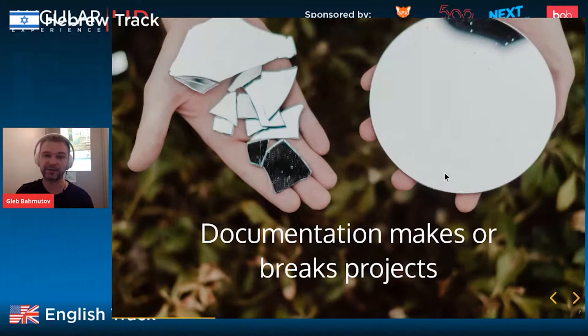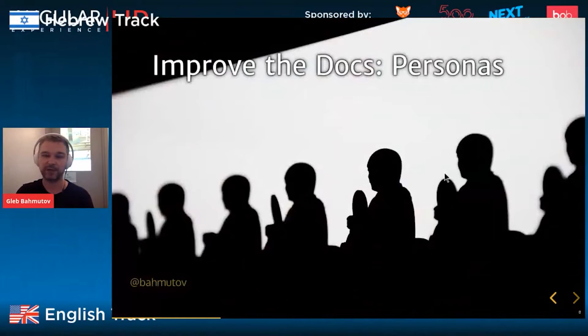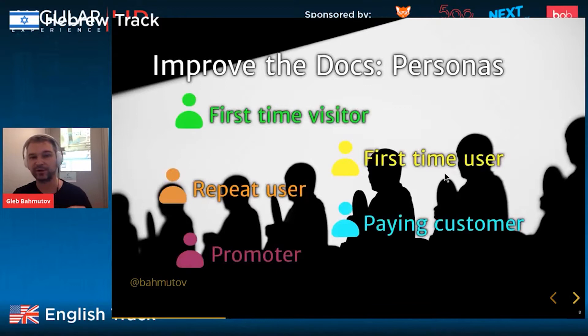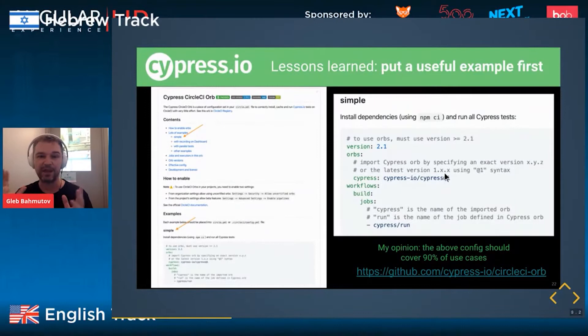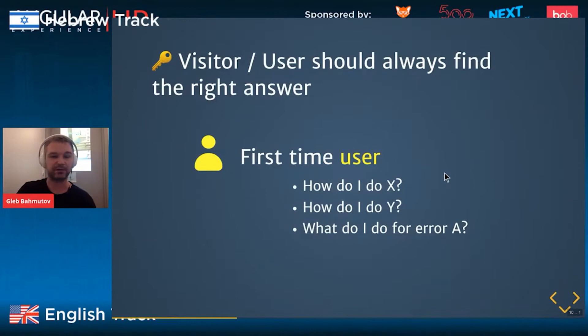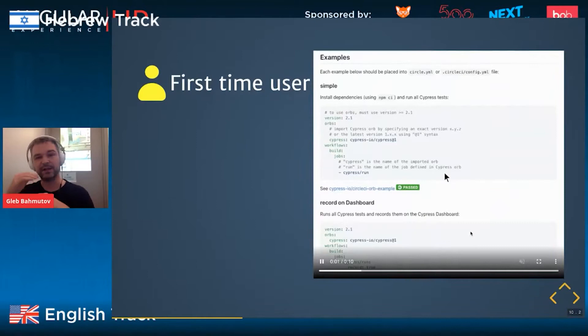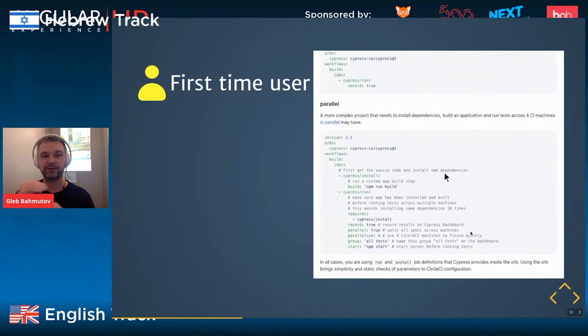Imagine you want to improve your documentation. The way to approach it is to divide all the users of your documentation site into personas: first-time visitor, first-time user, repeat user, paying customer, and promoter. Every persona should have their questions answered. A first-time visitor might ask 'what does this tool do? Will it work for me?' The trick is to put a hello world example that explains the main use case right there as the first thing. For first-time users asking 'how do I do X or Y?', we create simple examples that show the main use cases.